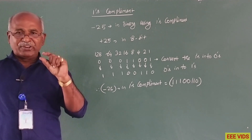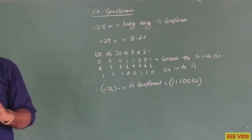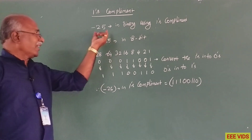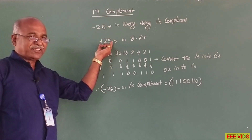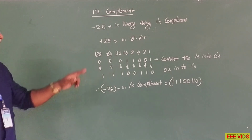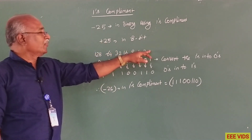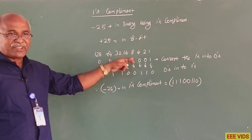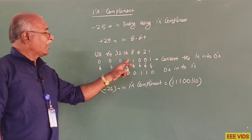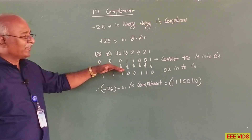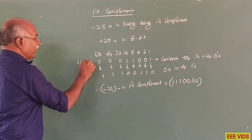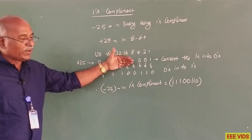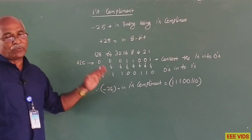So what do we say? First, whatever the negative number is in binary, that is the positive number — we invert 0s into 1s and 1s into 0s in its binary. For example, minus 25 in 1's complement: we obtain plus 25 in binary, which is 0, 0, 0, 1, 1, 0, 0, 1. This is the binary representation of plus 25. If we do the negative representation, we invert to get minus 25 in 1's complement.